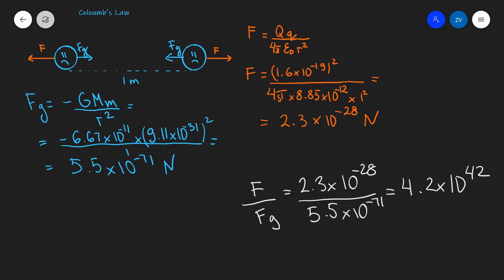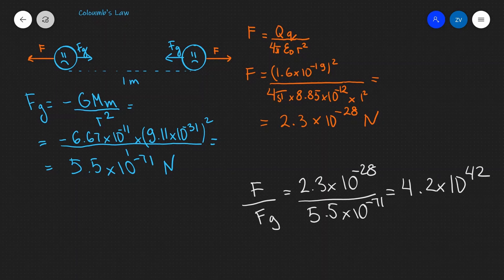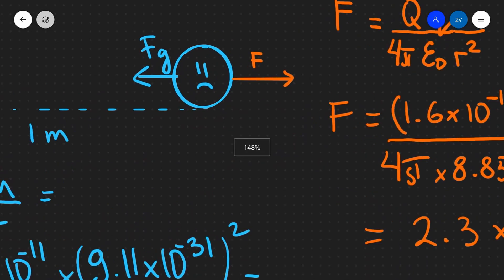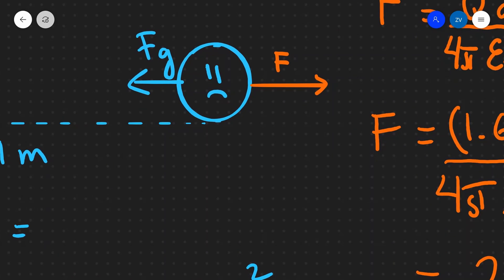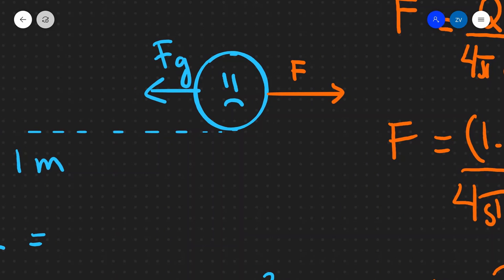This is a humongous difference which just shows us how incredibly strong the electrical force is and how incredibly weak in comparison the gravitational force is. In fact, if I was to draw these vectors to scale, well that really is impossible because I'm going to have to draw this gravitational force vector being incredibly small.